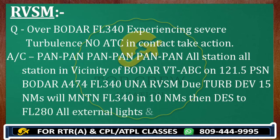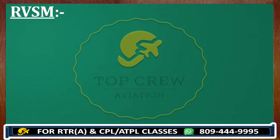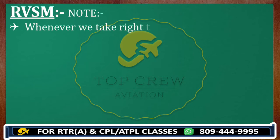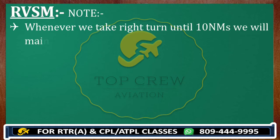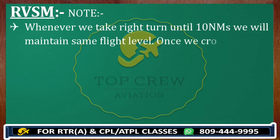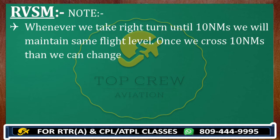Do remember — whenever you take a right turn, until 10 nautical miles you maintain the same flight level wherever you were. Once you have taken the right turn and crossed 10 nautical miles, then you can change plus or minus 500 as per your situation, condition, heading, and flight level at that point of time.